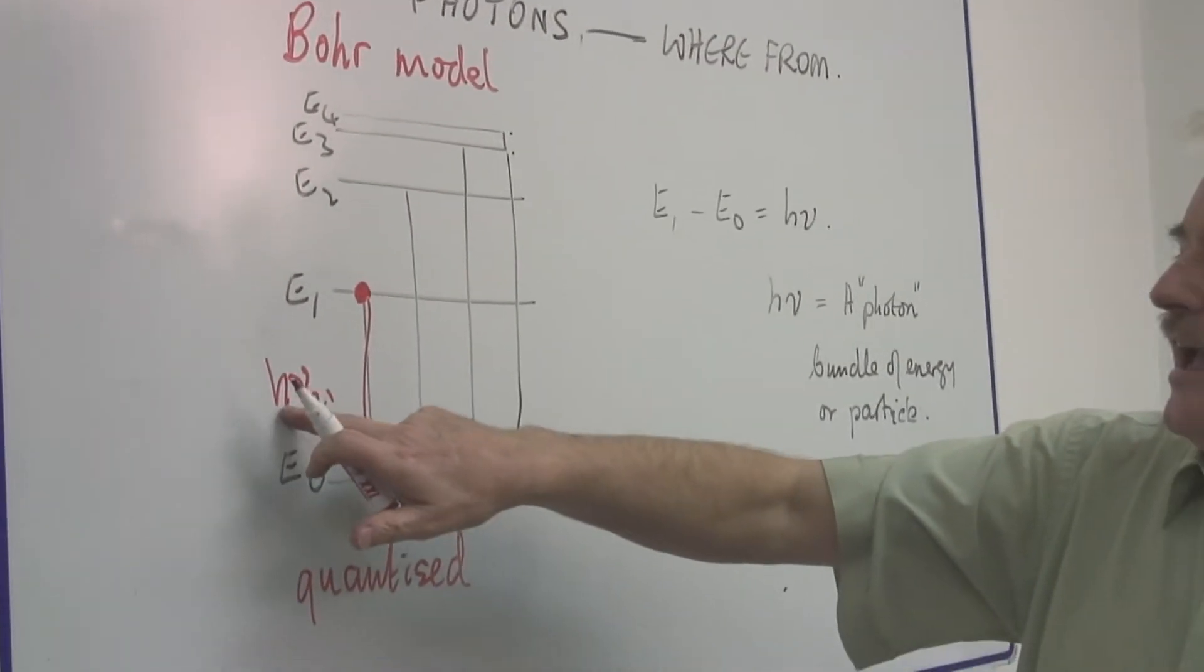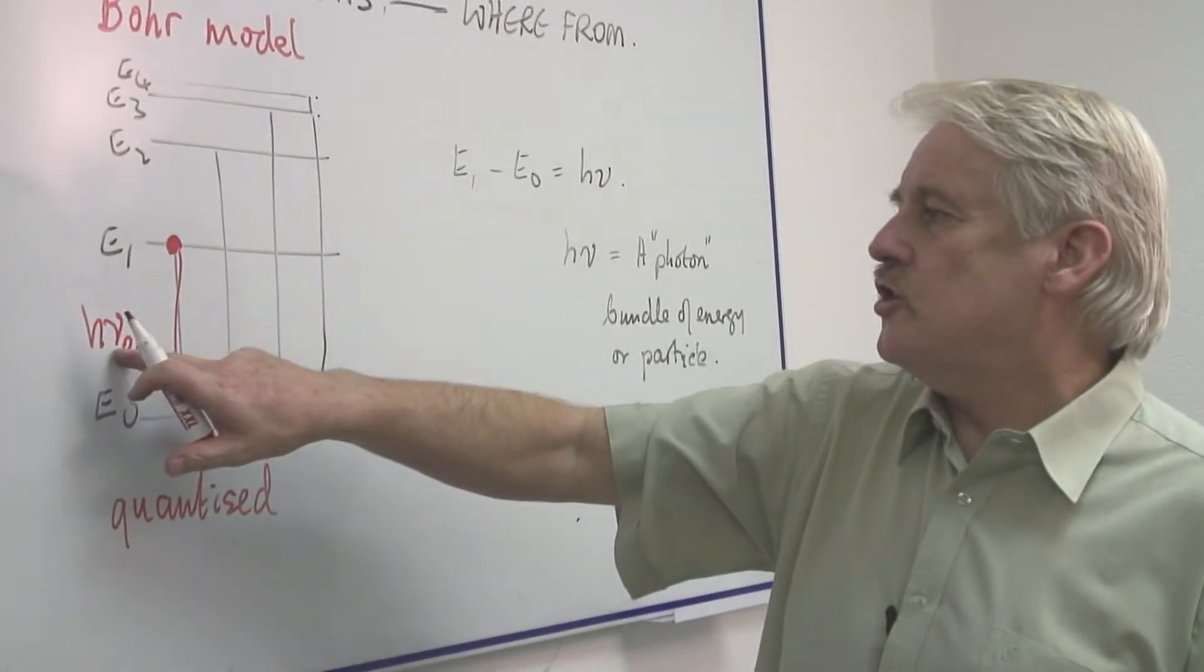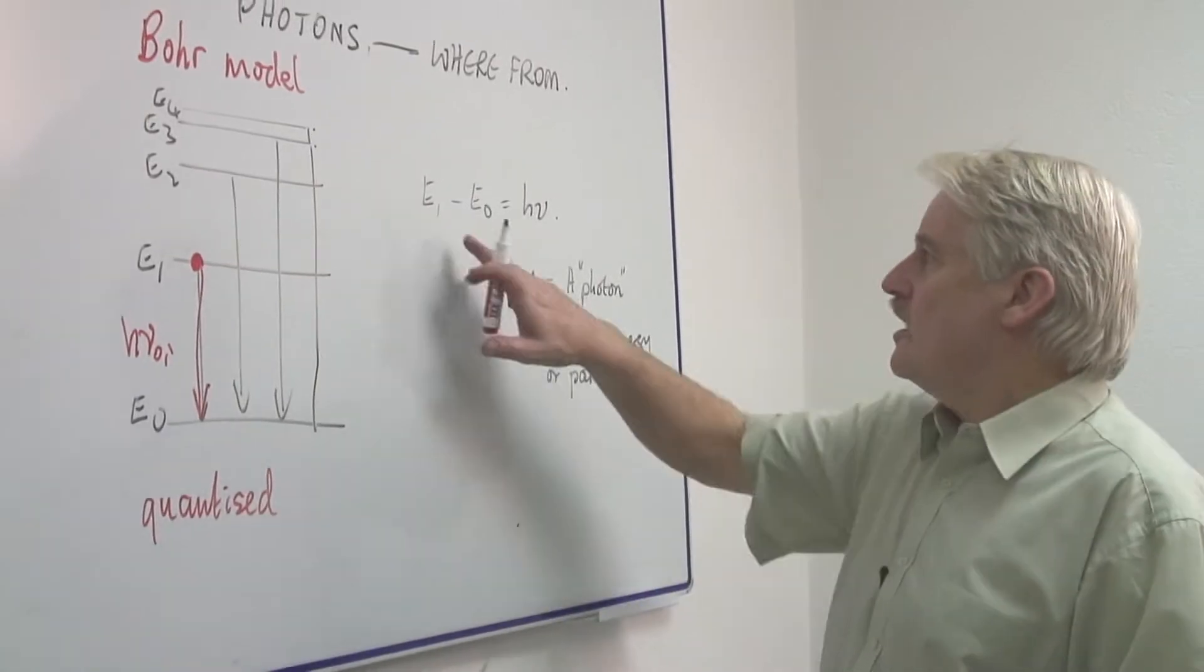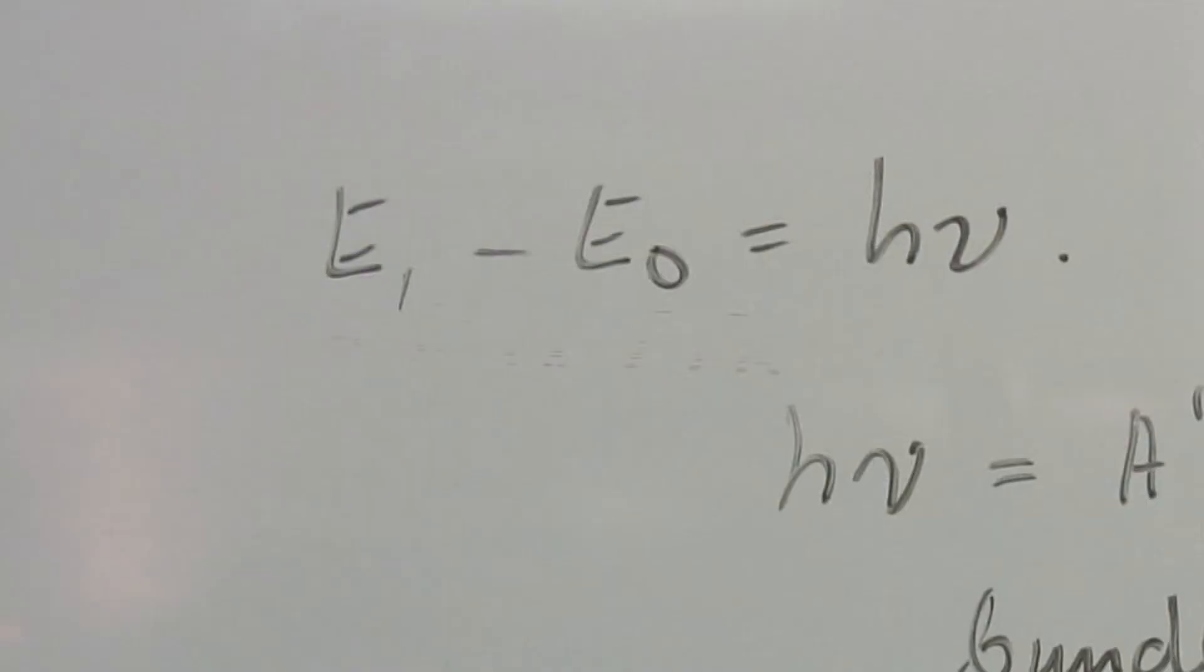That is, H is Planck's constant and nu is the frequency. This is a certain amount of energy, where the difference in energy is equal to Planck's constant times the frequency.